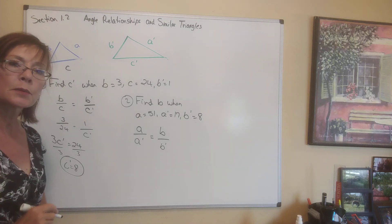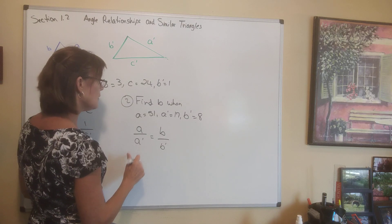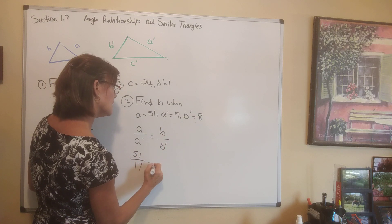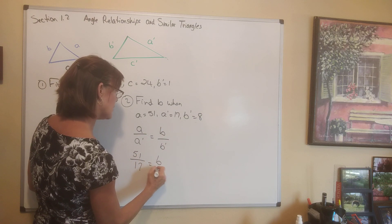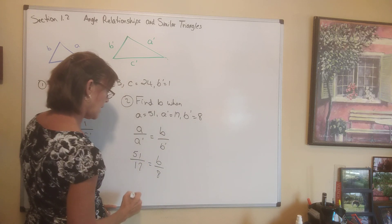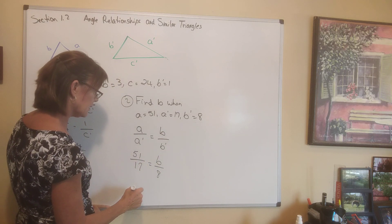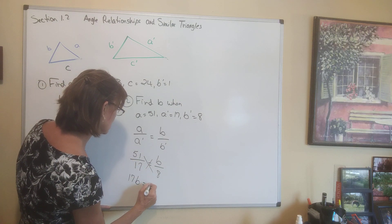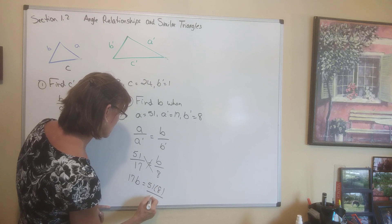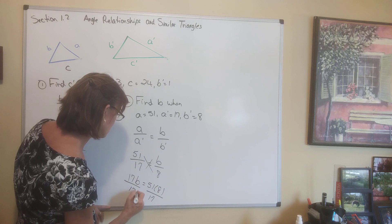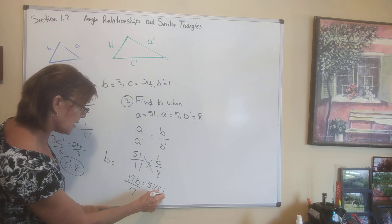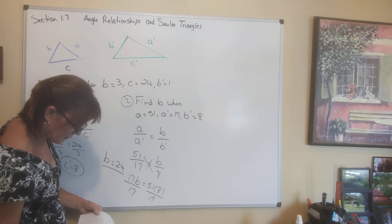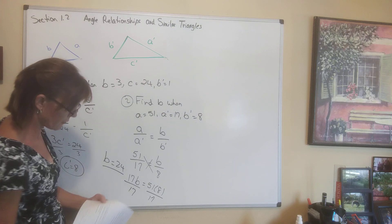This is not the only good proportion I could write, but it will do. Cross-multiplying: 17 times B equals 51 times 8. Dividing by 17 gives us B equals 24.